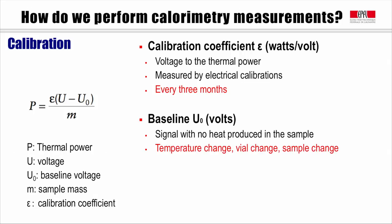Epsilon is measured by electrical calibration. Usually, we do this every three months with the software. U0 is a signal with no heat produced in the sample, but a reference inside. The calibration should be done when we change the temperature, the vial, or samples.